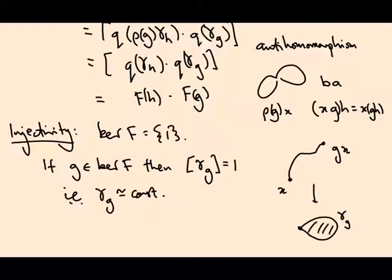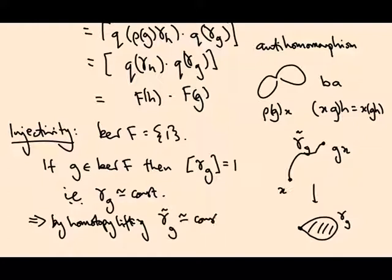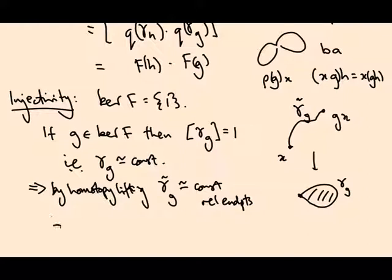If this is homotopic to the constant path, then by the homotopy lifting property, this path is homotopic to the constant path rel endpoints. The constant path is fixed, but the constant path has both of its endpoints at x, so that tells us g of x equals x. That tells us g is the identity because this is a properly discontinuous action, so it has no fixed points like this.